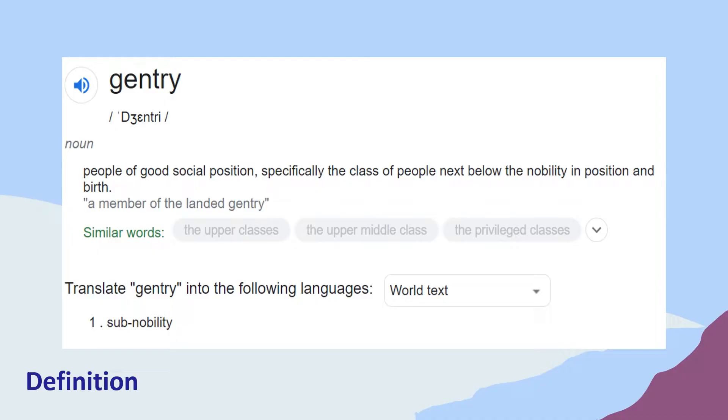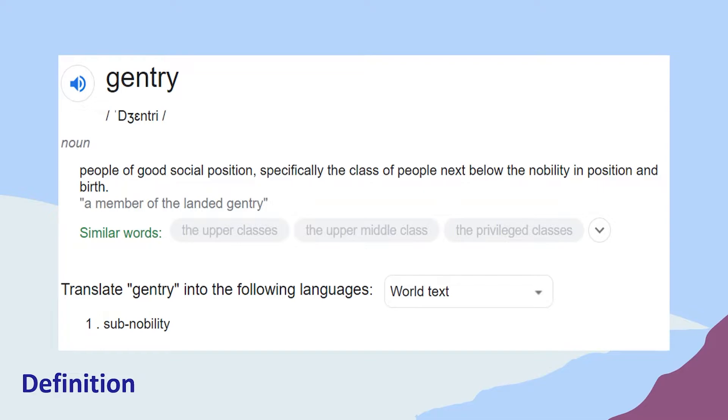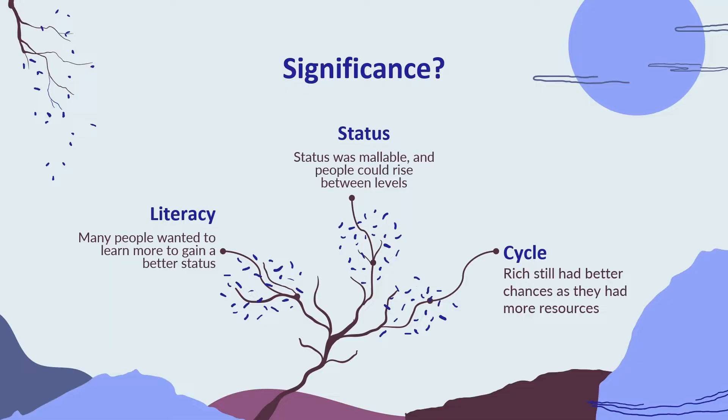A quick definition of what the gentry means: it's a person of good social position, specifically the class of people next to below the nobility. In ancient China, this status was gained from the exams and was known as the scholarly gentry. People could start rising to higher classes once they passed the exams, becoming governmental officials. The significance of this is that literacy became even more prioritized, and status was now malleable — meaning people could rise between levels and were no longer confined to the lower levels they once believed they were stuck in.